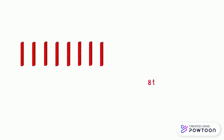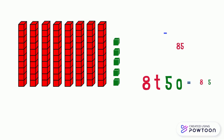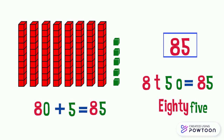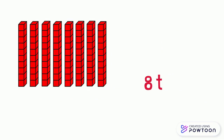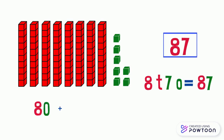8 tens and five ones represent the number 85. 80 plus 5 equals 85. 8 tens and seven ones represent the number 87. 80 plus 7 equals 87.